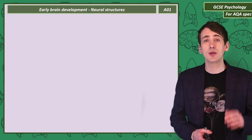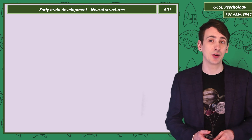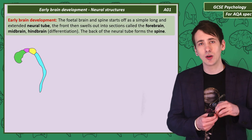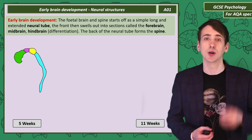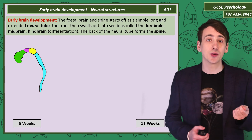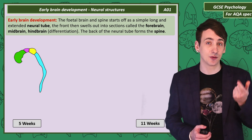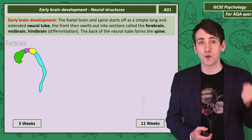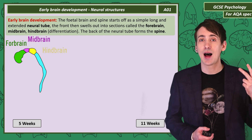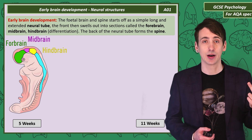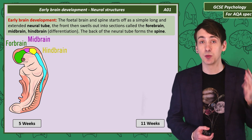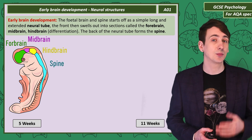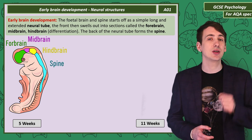When we think about the earliest stage of brain development, we start with a long and extended neural tube. The front of this tube then swells out into three sections: the forebrain, the midbrain, and the hindbrain. The back of the tube will then form the spine. This process is called differentiation.